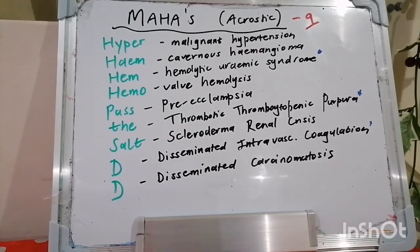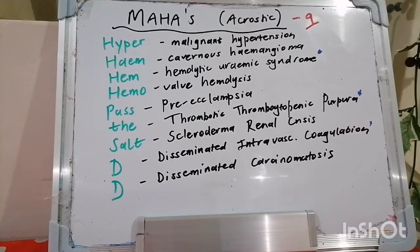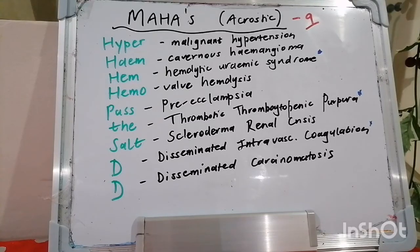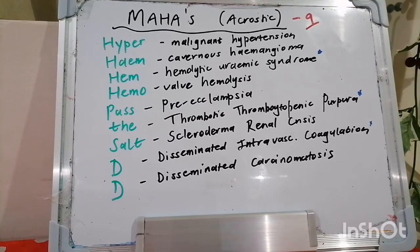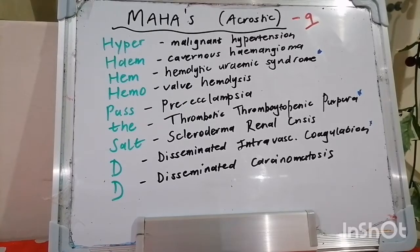But first, allow me to encourage you with some scripture. I'm sure we are all looking forward to some kind of plan in our lives, some goal we want to achieve and come to fruition. Jeremiah 32:27 says, 'Behold, I am the Lord, the God of all flesh — is anything too hard for me?' And Romans 8:28 declares, 'All things work together for the good of those who love the Lord and those who have been called according to His purpose.' God is able to help you achieve your goals. Just commit yourself to Him, surrender yourself to Him, and watch how He will work in your life. Amen.